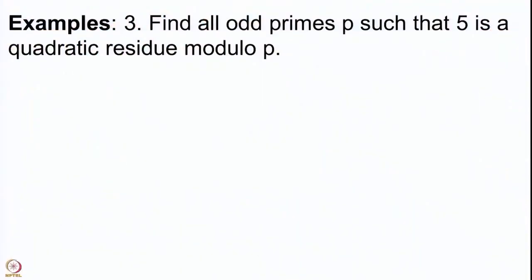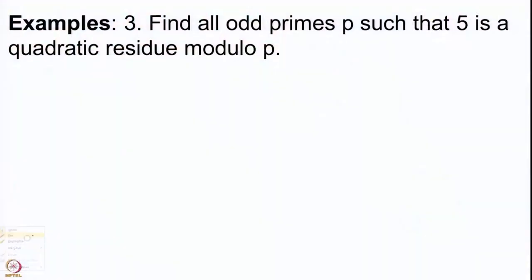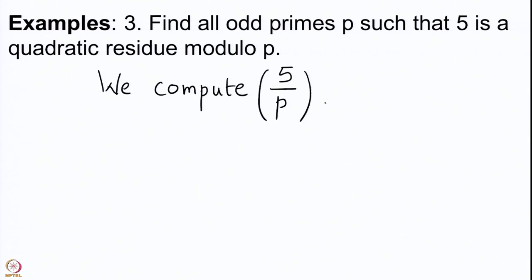We will now do a similar example for 5. We want to compute all odd primes p such that 5 is a square modulo p. We look at odd primes because if p is 2 then every odd number is congruent to 1 modulo 2, so every odd number is a square modulo 2. So we only need to consider odd primes to make the actual computation. We are interested in computing the Legendre symbol (5/p).